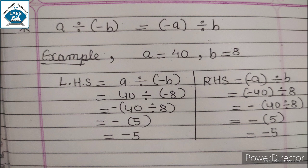Now right hand side: minus A divided by B. A equals 40, so minus 40 divided by 8. Taking minus common, 40 divided by 8 equals 5, so the answer is minus 5. Right hand side equals left hand side because both sides give the same answer, minus 5. So we can say that A divided by minus B equals minus A divided by B.